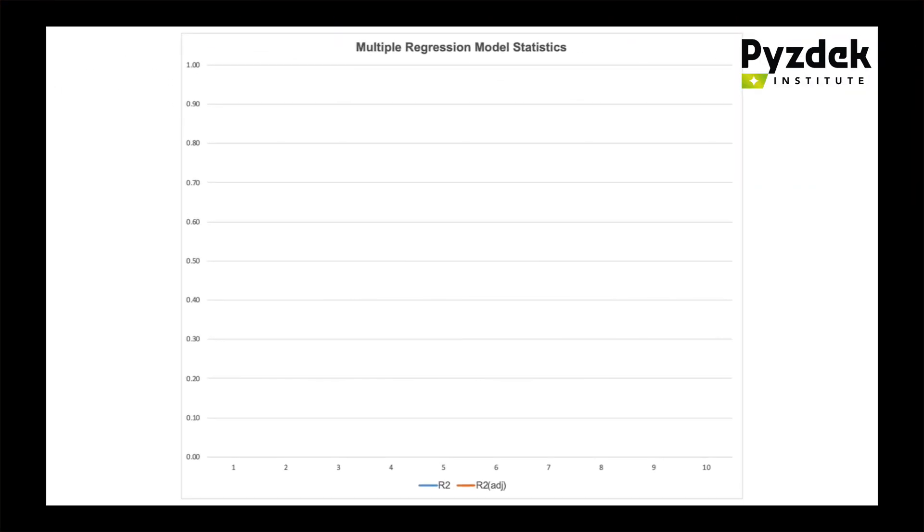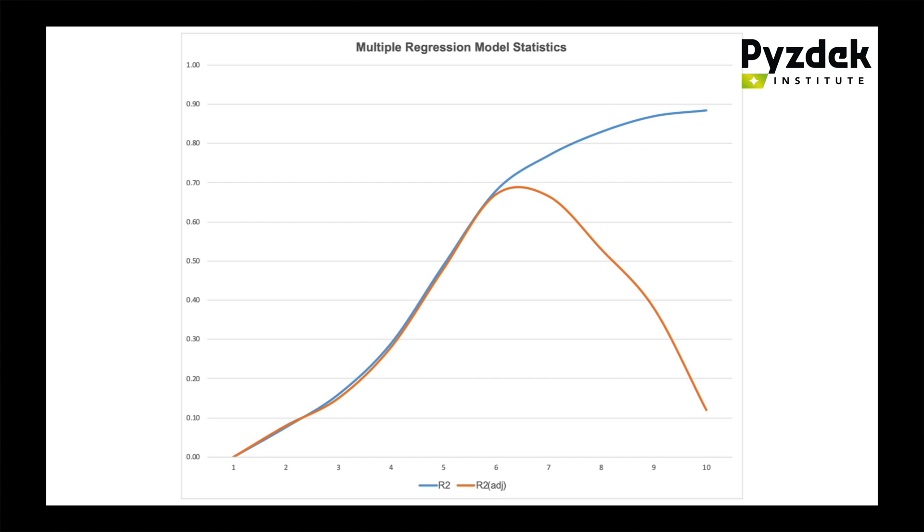R-squared will always get larger as more variables are added. The next parameter is R-squared adjusted, which is R-squared adjusted for the degrees of freedom. An issue with R-squared adjusted is it's not bound by a negative 1 to positive 1 range like R-squared, so it may not be intuitive to use. To demonstrate what happens with overfitting: on the X-axis are incrementally more X variables, R-squared values always increase and typically plateau, while R-squared adjusted typically increases and then sharply declines.